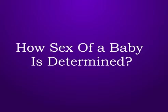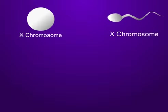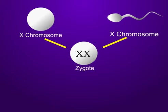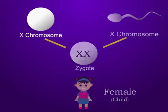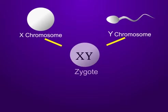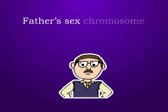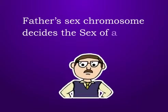Now we see how the sex of a baby is determined. When an egg is fertilized by a sperm containing X chromosome, the zygote formed would have two X chromosomes and develop into a female child. When an egg is fertilized by a sperm containing Y chromosome, the zygote formed would develop into a male child. So, it is the father's sex chromosome that decides the sex of a baby.